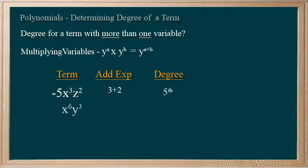x to the sixth, y to the third. Well, 6 plus 3 is 9, giving us a ninth degree term. 3x squared, yz gives us 2 plus 1 plus 1, making this a fourth degree term.